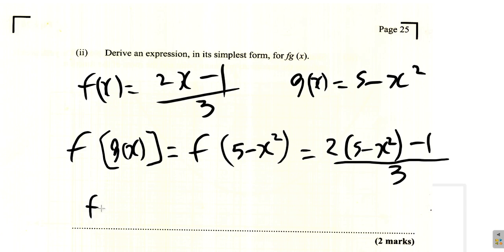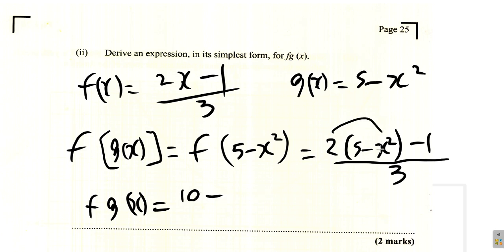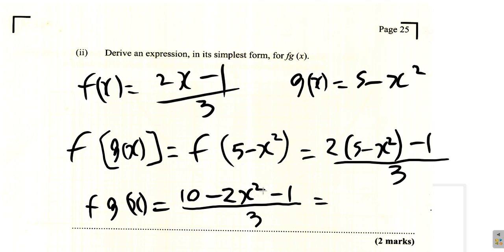So f(g(x)) = [2(5 − x²) − 1] / 3. Multiplying out: 2×5 = 10, 2×x² = 2x², minus 1, all over 3. That gives (10 − 2x² − 1)/3 = (−2x² + 9)/3. So f(g(x)) = (−2x² + 9)/3.